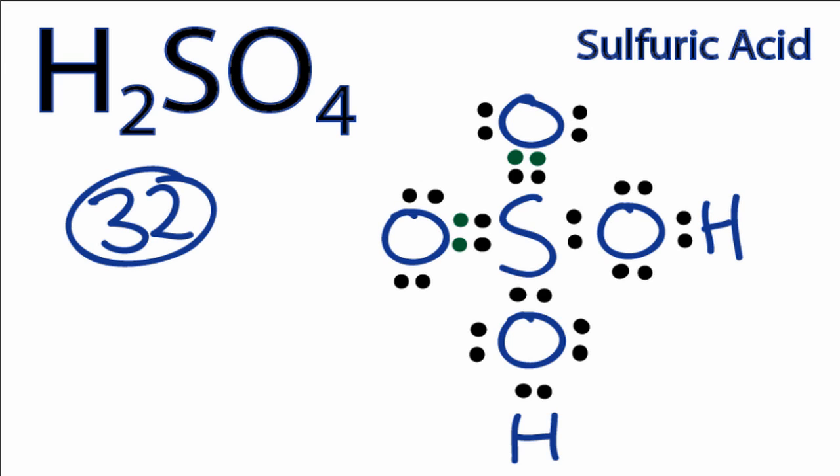When we form those two double bonds and recalculate our formal charges, we'll find that the formal charges on each atom in the H2SO4 Lewis structure is now 0, and that makes this a much better structure for the sulfuric acid molecule.